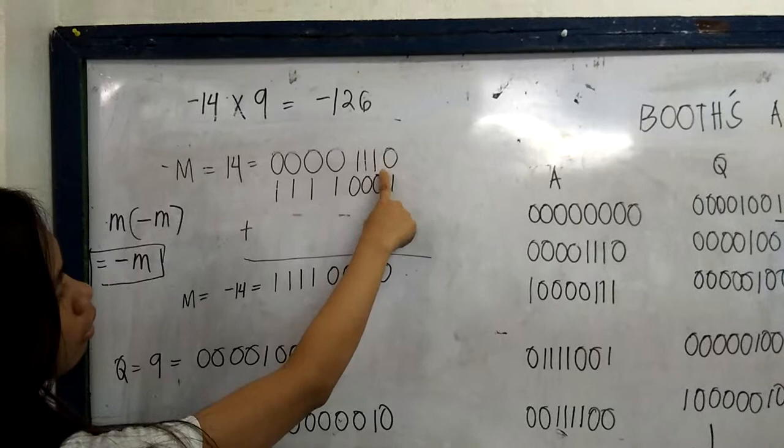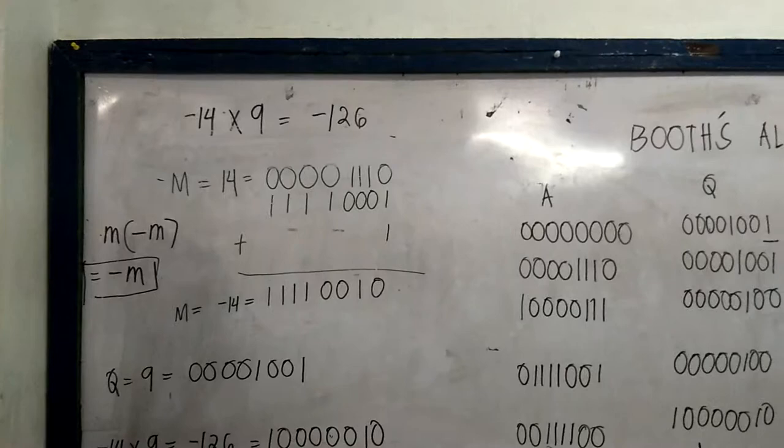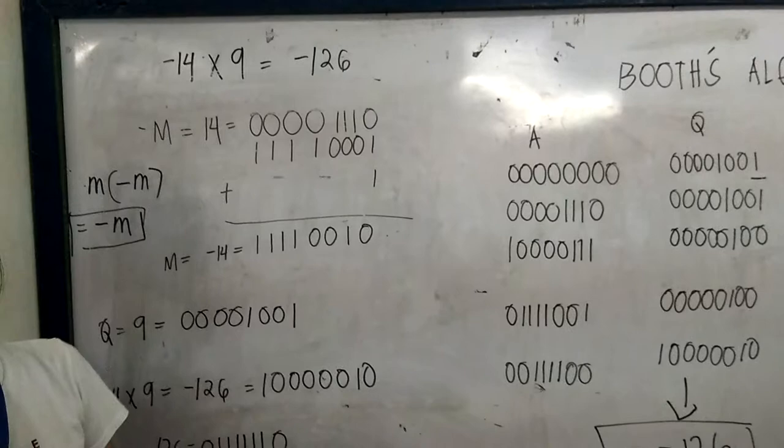Then add 1. 1 plus 1 is equal to 0, carry 1. 1 plus 0 is equal to 1, and then the rest copy. And then this will be the result of negative 14 in binary.